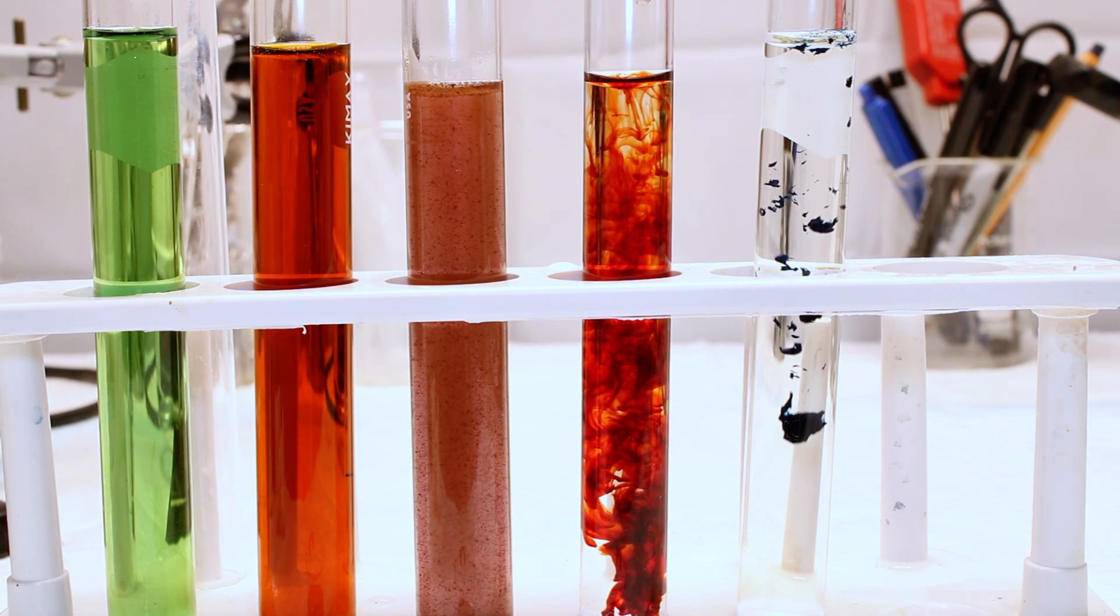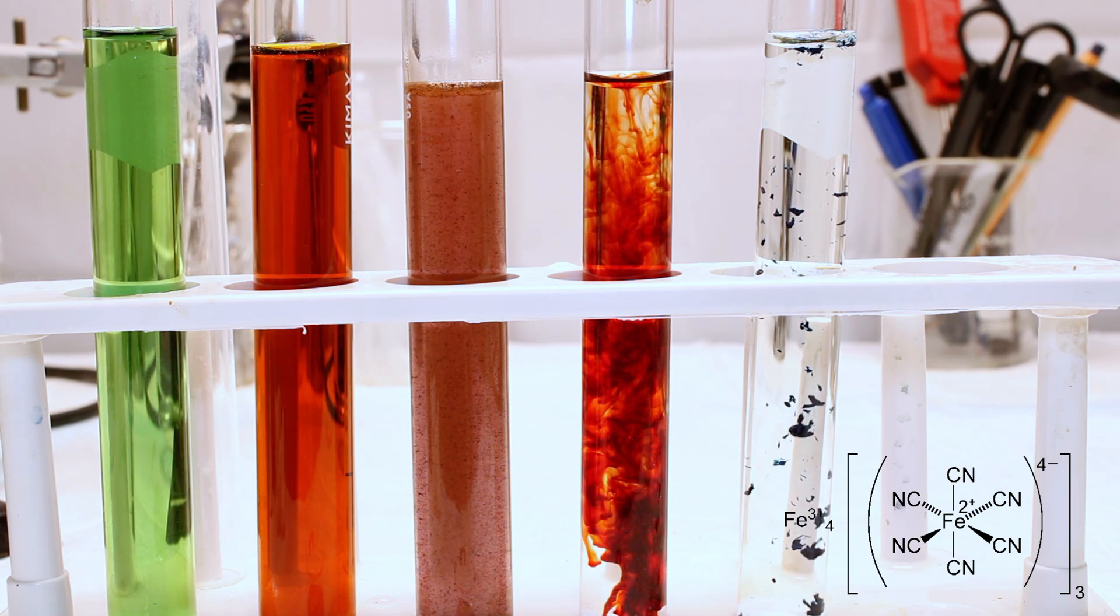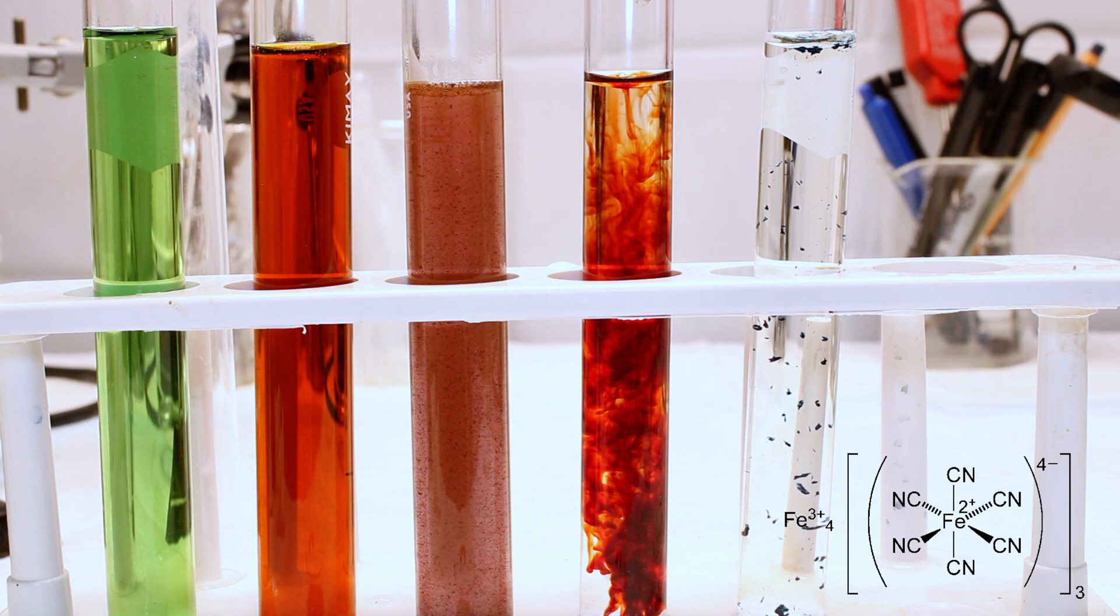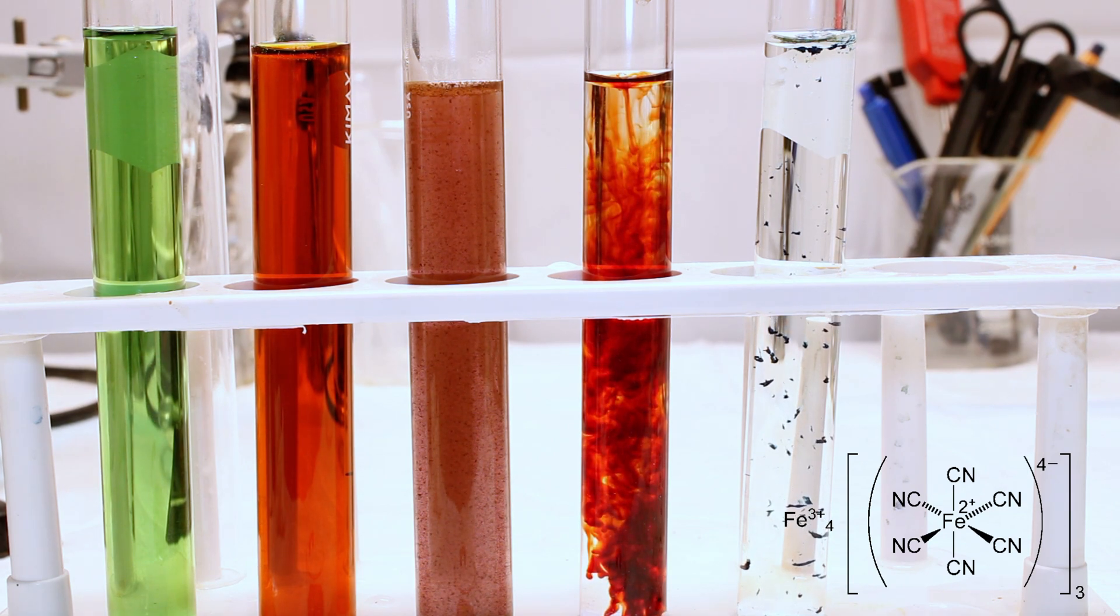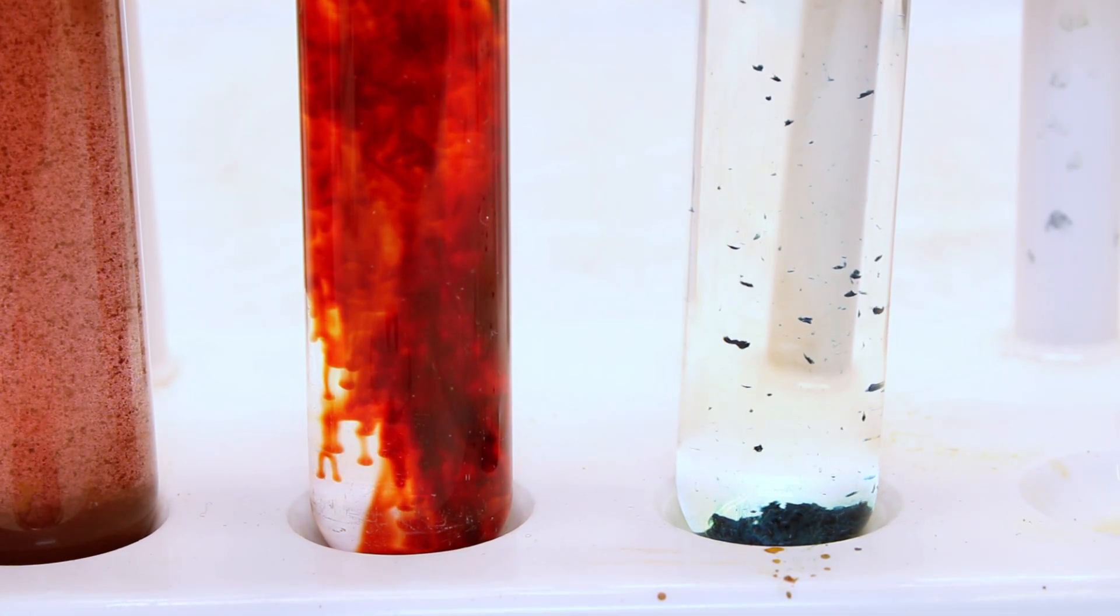You can also add some iron(III) chloride, or again any iron(III) salt, to a solution of potassium ferrocyanide. This forms a bright blue complex that's used as a pigment called Prussian blue. I've actually made this pigment before on this channel and I've got a video coming up where I'm going to make it again, so keep a lookout for that if you're interested.